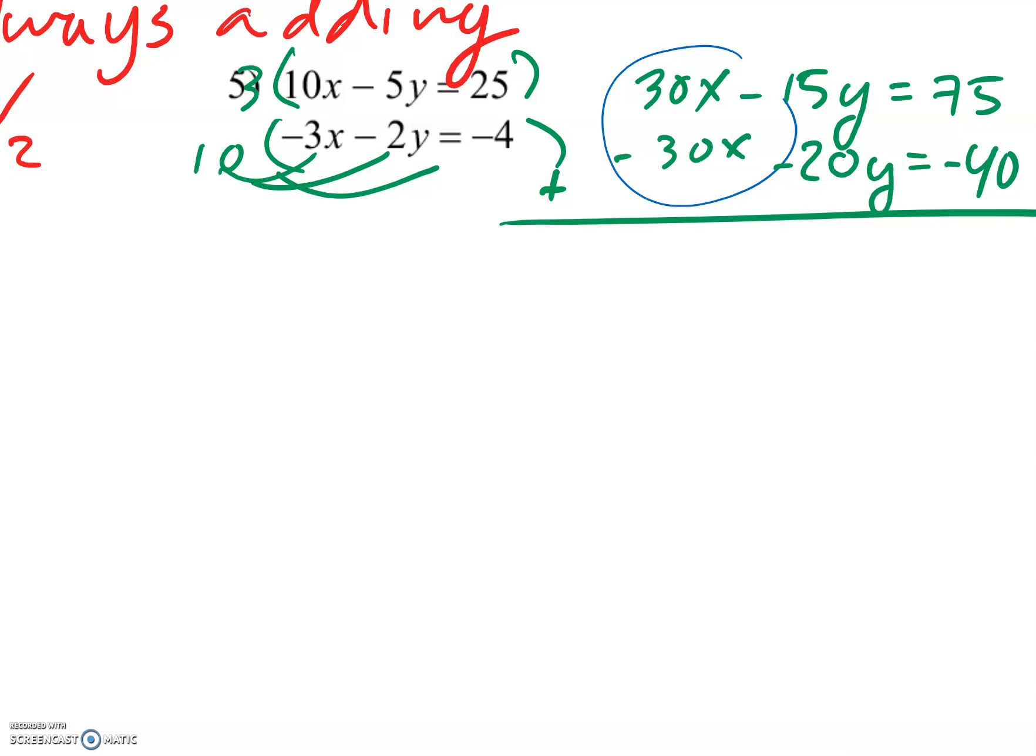Now I'm always adding, remember? Those eliminate. I've got negative 35y equals 75 minus 40 is 35. Y equals negative 1.